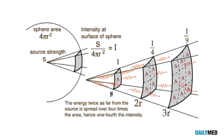However, if we increase the distance by a factor of 2 — in this case it will represent the radius of a bigger sphere that's not illustrated here — our intensity will decrease by a factor of 4 because of the radius being squared in the formula.